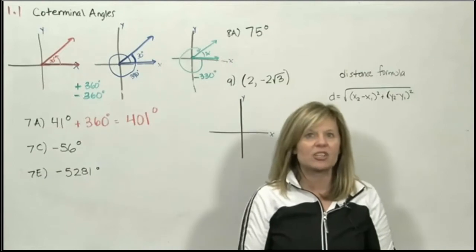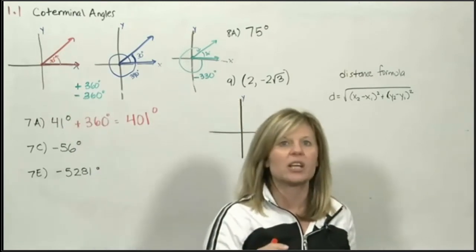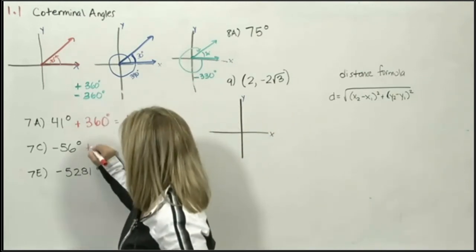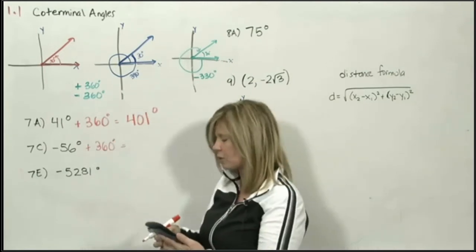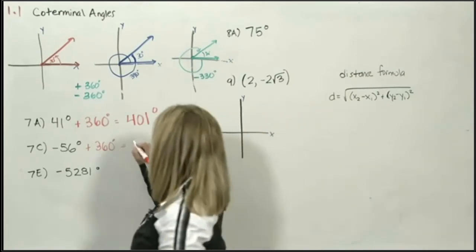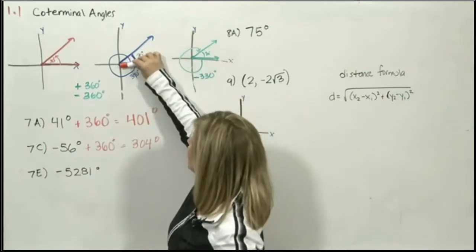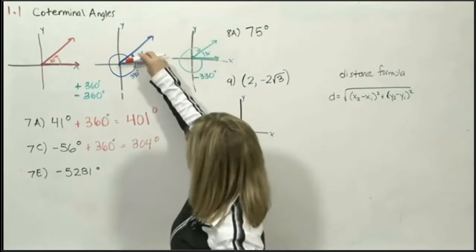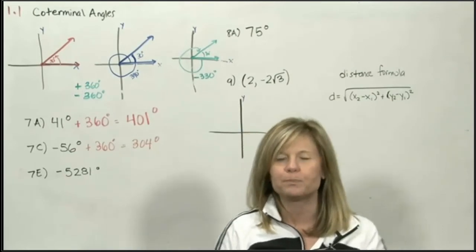If I have an angle that's negative 56 degrees and I want to find a coterminal angle, do I add 360 or subtract 360? They want the angle to be positive, so I would add 360. You may use your calculator so you don't make an arithmetic mistake. Negative 56 degrees plus 360 degrees is 304 degrees. If I draw an angle that's negative 56 degrees, going back, it would be in quadrant 4. If I drew a positive 304-degree angle, I would rotate counterclockwise and that terminal ray would also land in quadrant 4.